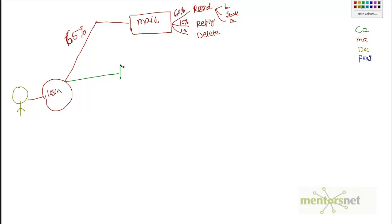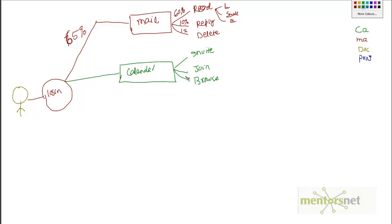Next is the calendar application. In the calendar application, he might be inviting somebody, joining somebody's meeting, or just browsing the calendar. Let's say 10% of the time he goes to the calendar application. Once in the calendar, most of the time he's going to spend browsing, maybe 15% of the time he'll invite somebody for a meeting, and maybe 5% of the time he might join something.